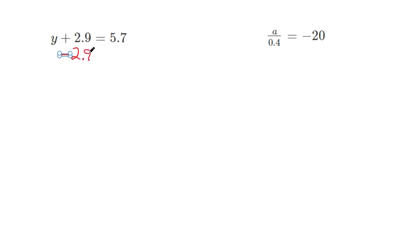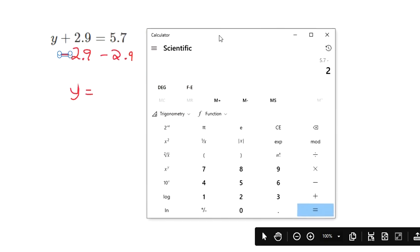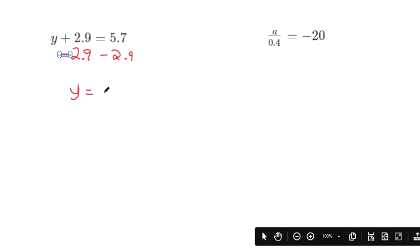I'm going to get rid of the 2.9 by doing the opposite to both sides. So you have y is 5.7 minus 2.9. So y is going to be 2.8.